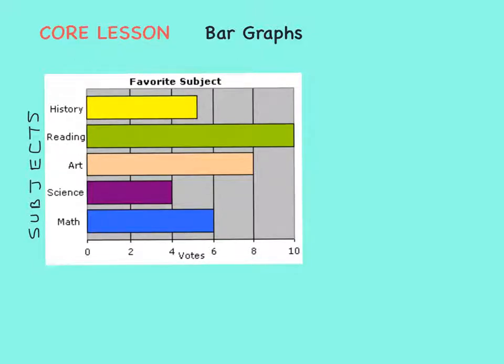As you can see, some kids like history, some kids like reading, art, science, and math. But what if we want to know how many kids like each subject? The bar graph tells us this.